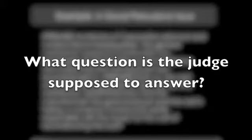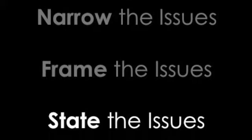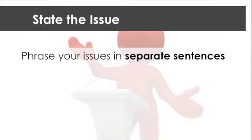The only thing that matters to the judge is what question he or she is supposed to answer. Now that we've talked about narrowing and framing the issue, let's move on to how you state the issue. Phrase your issues in separate sentences. A widely followed convention is to have a one-sentence version of the issue — you don't have to follow that.